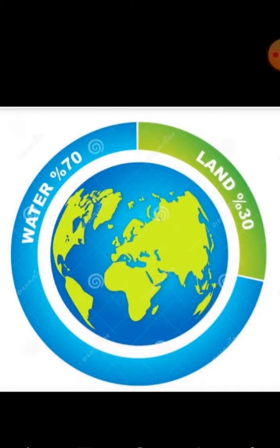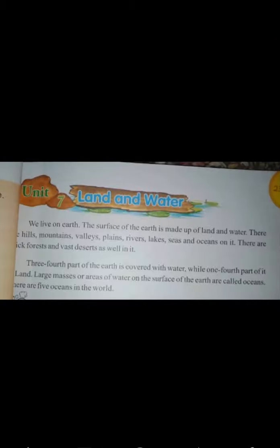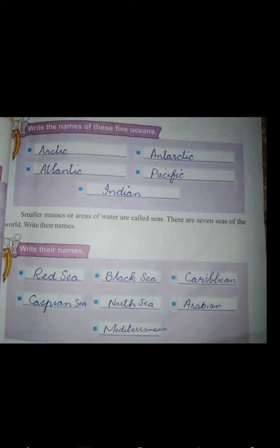Large masses or areas of water on the surface of the earth are called oceans. There are five oceans in the world. Large areas of water present between continents are called oceans. Do you know which is the largest and the smallest ocean? The Pacific Ocean is the largest ocean and the Arctic Ocean is the smallest ocean of the earth.